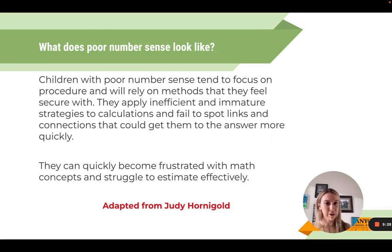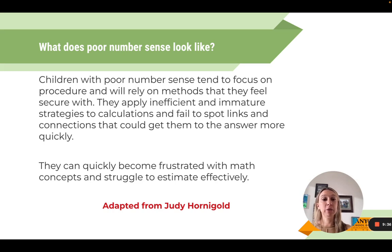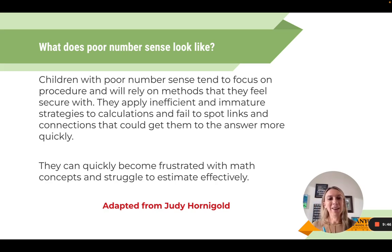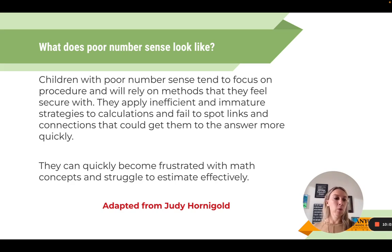What does it look like when a student doesn't have number sense? This may describe some students who even present as good mathematicians. Children with poor number sense tend to focus on rote procedure — they have one procedure memorized and rely on methods they feel secure with. They apply inefficient and immature strategies to calculations and fail to spot links and connections that could get them to the answer more quickly.